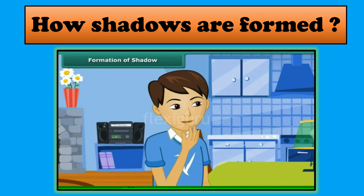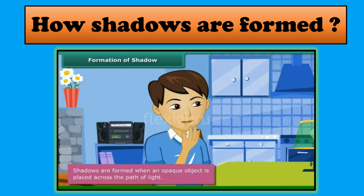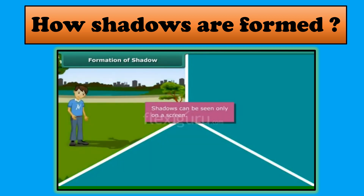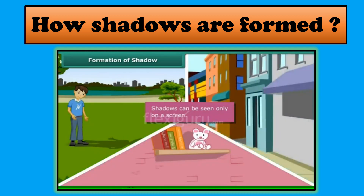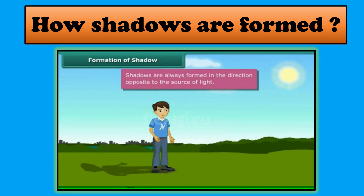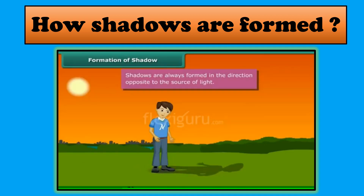You are also curious to know the direction in which shadows are formed. Shadows are formed when an opaque object is placed across the path of light. Shadows can be seen only on a screen. The ground, walls of a room, buildings and other such surfaces act as screens for shadows. Shadows are always formed in the direction opposite to the source of light. In the morning, since you were facing the sun, the shadow was behind you. In the evening, the sun was behind you, causing the shadow to be formed in front of you.